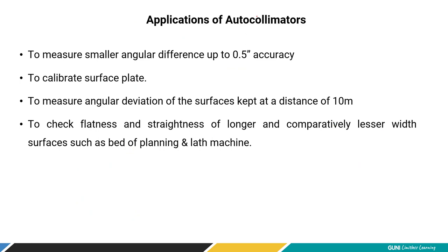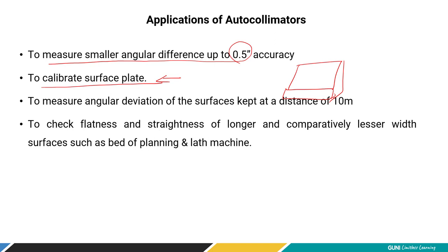The autocollimator is used to measure smaller angular differences up to 0.5 seconds. It is also used to calibrate surface plates — which is very important in the metrology lab and workshop where granite surface plates can be one to two meters in size. For calibrating flatness and straightness of such plates, the autocollimator is widely used. Basically, the autocollimator is used as a calibrating tool for finding angular deviations.